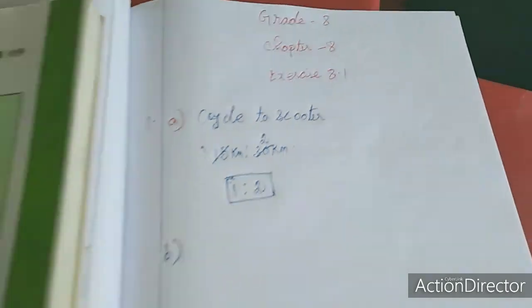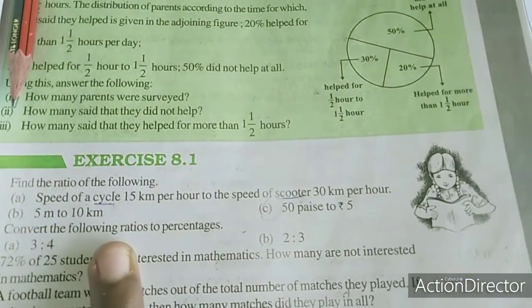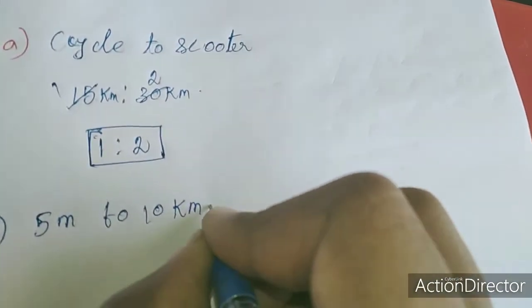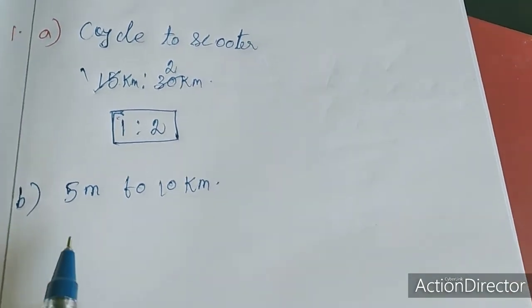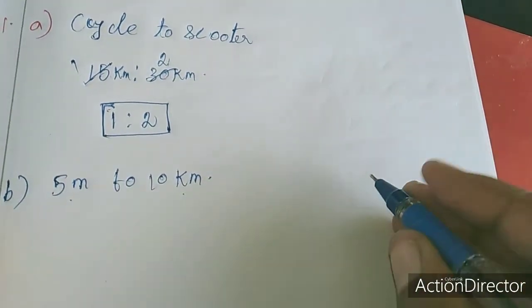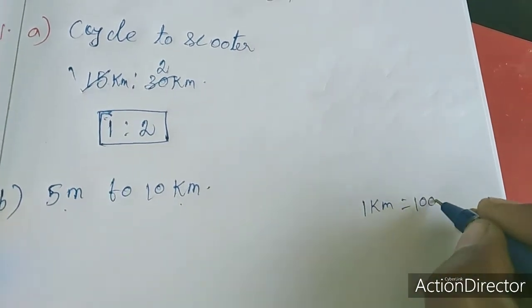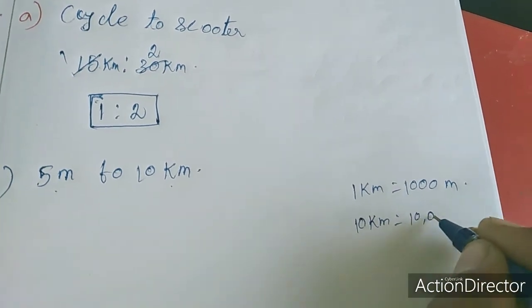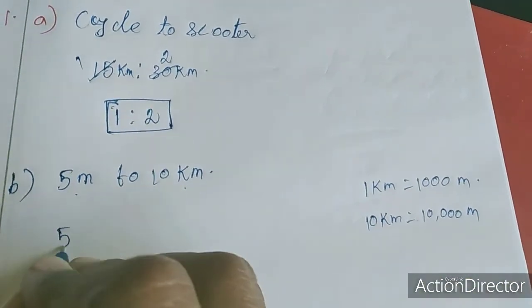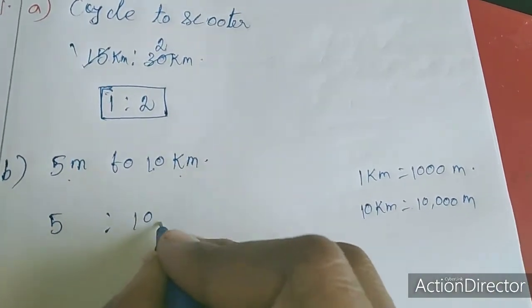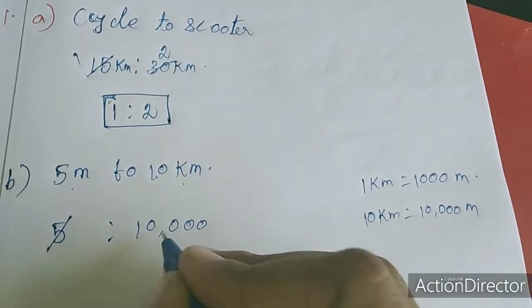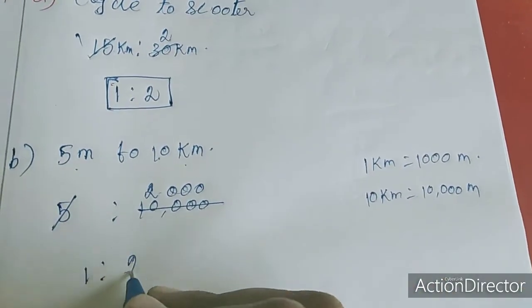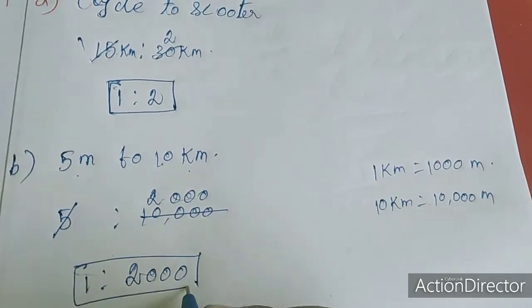Now I will move to the B sum. B sum is 5 meter to 10 km. We have to see, this is in meter but this is in kilometer. So 1 km equals 1000 meter, so 10 km equals 10,000 meter. I am going to apply this: 5 is, for 10 km I am substituting 10,000 meter. Now I am cancelling: 1 times 5 is 5, 2 times 5 is 10, this is 3 zeros. So the ratio is 1 is to 2000.